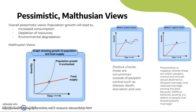Because population growth is exponential and food supply is arithmetic, population growth will exceed food supply at a certain point where the carrying capacity is exceeded, leading to famine. At this point, there are positive checks — occurrences outside of people's control such as disease, death, starvation, and war — and preventative or negative checks, which are within people's control such as sexual abstinence, delayed marriage, and reduced marriage among the poor, because Malthus believed poverty is a defect in people that should prevent marriage.